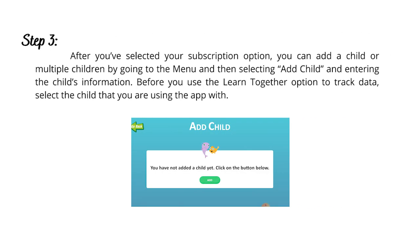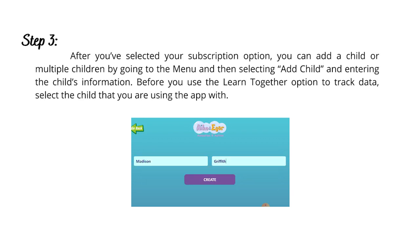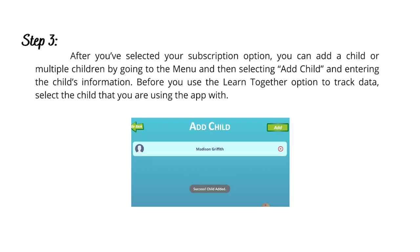Step 3: After you've selected your subscription option, you can add a child or multiple children by going to the menu and then selecting Add Child and entering the child's information. Step 4: Before you use the Learn Together option to track data, select the child that you are using the app with.